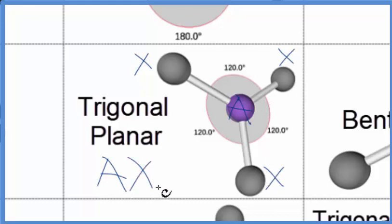...one, two, three. Sometimes people write AX3N0, but AX3 is fine as well. If you look this up on a table for AXN notation, again, you'd find trigonal planar.